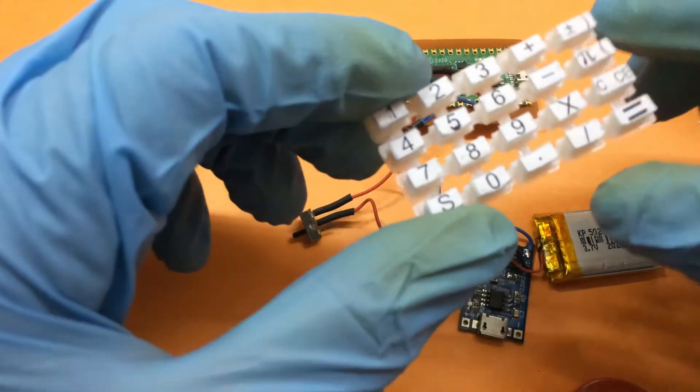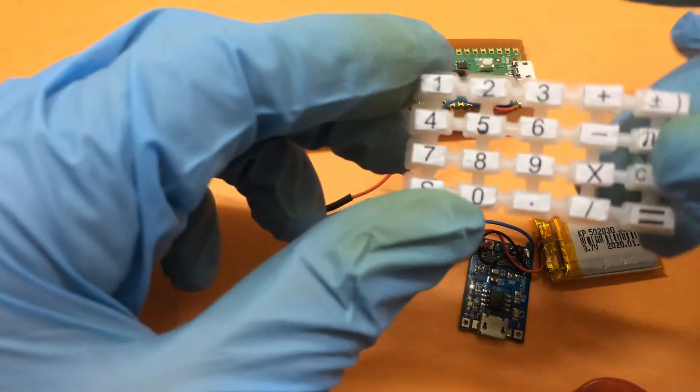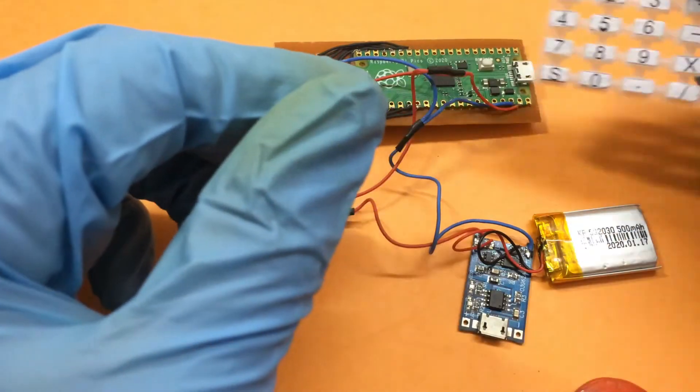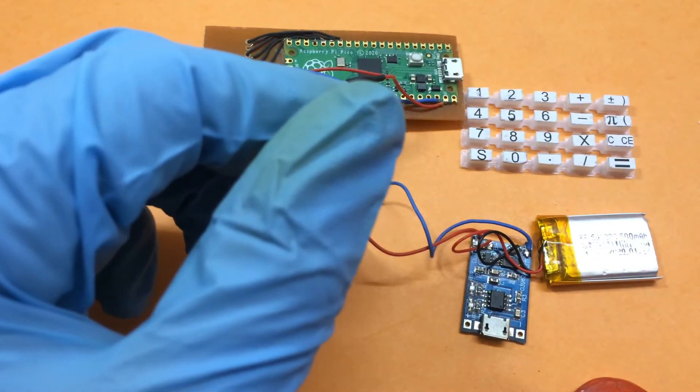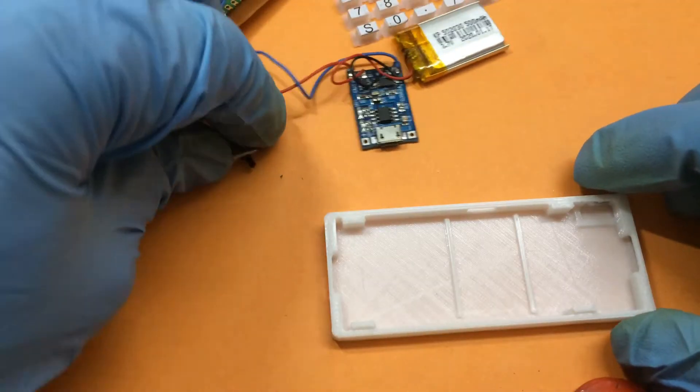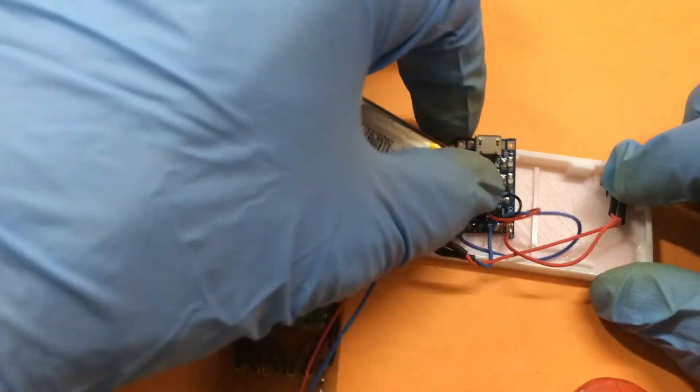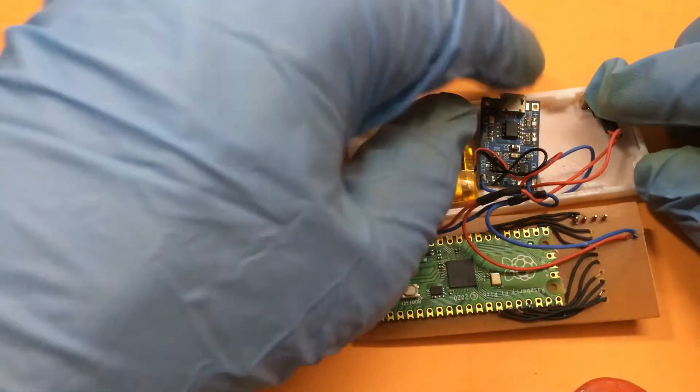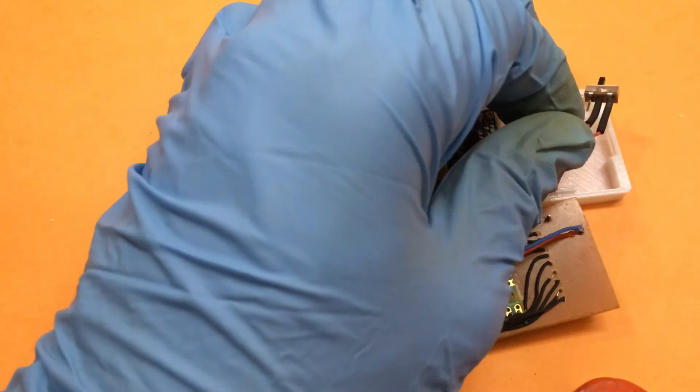For better usability, I have printed the numbers and symbols on a plain sheet of paper then stick it onto the keys. So let's move forward to the assembly part. First we will stick the switch and the charge circuitry using some hot glue. Then the battery using some double sided tape.